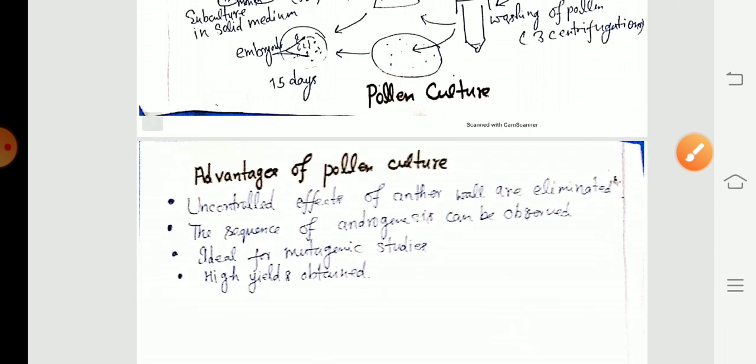There are some advantages of pollen culture. Uncontrolled effects of anther wall are eliminated. The sequence of androgenesis can be observed. It's ideal for mutagenic studies. High yields are obtained. This is done for today. Thank you.